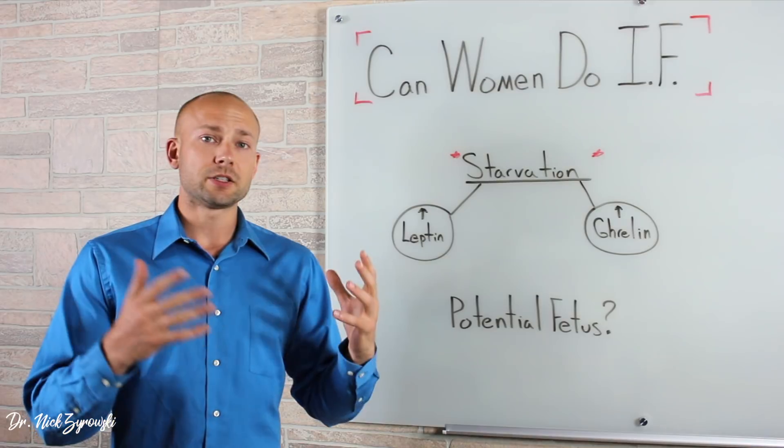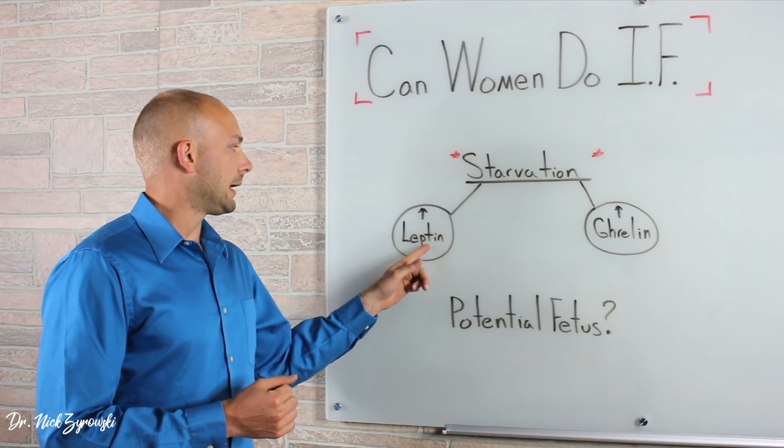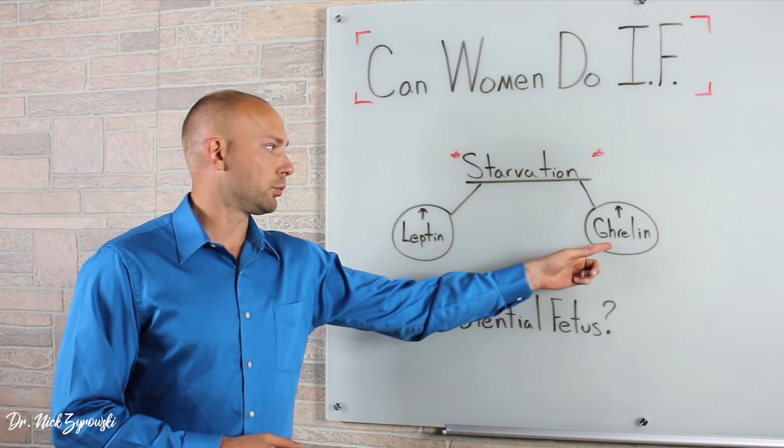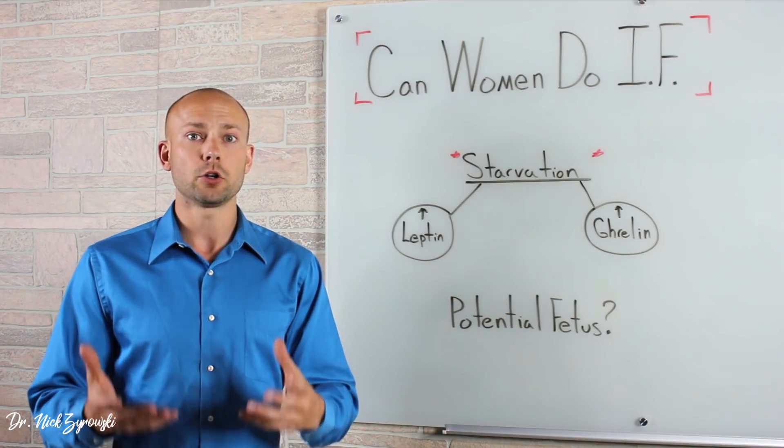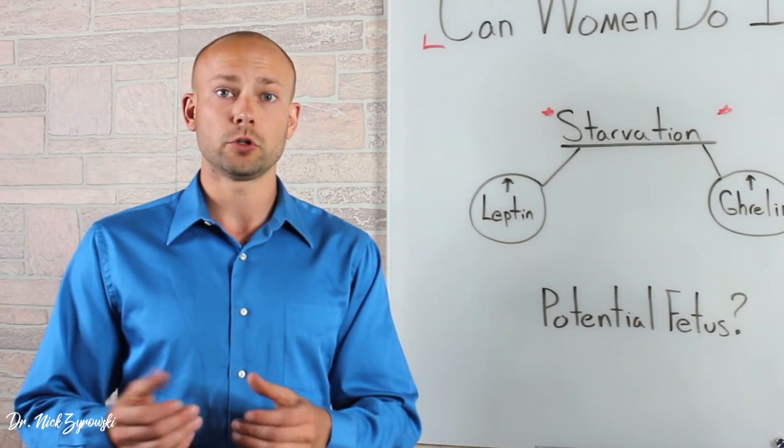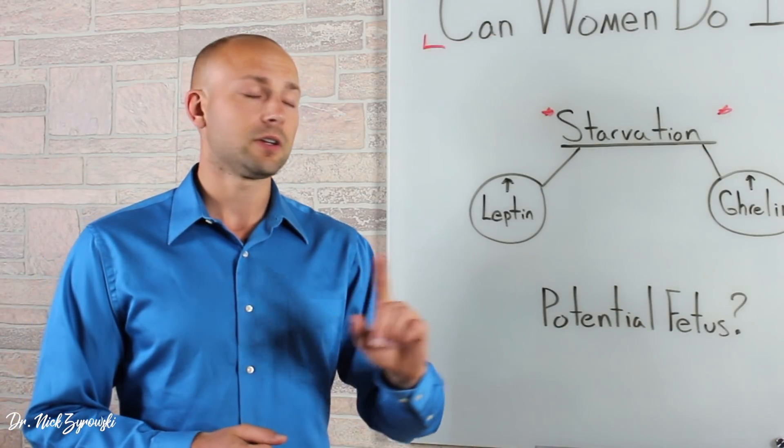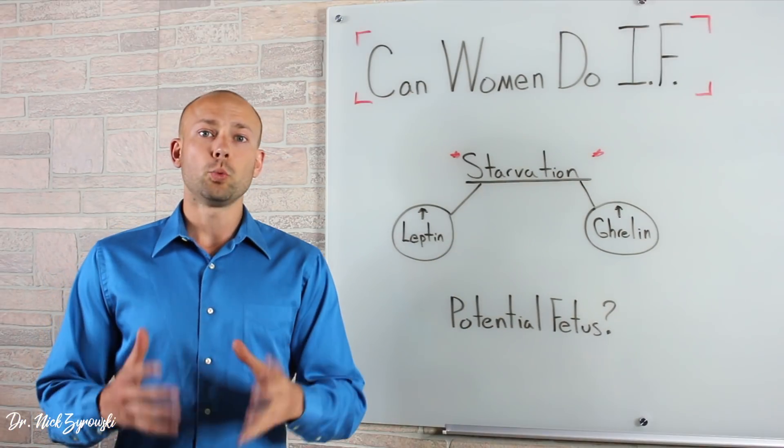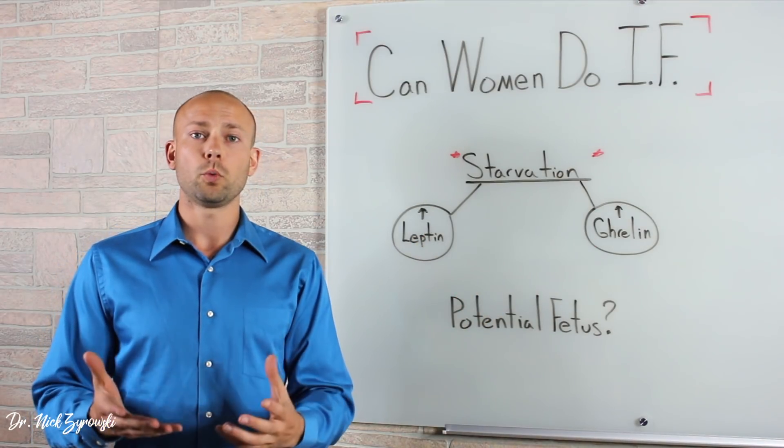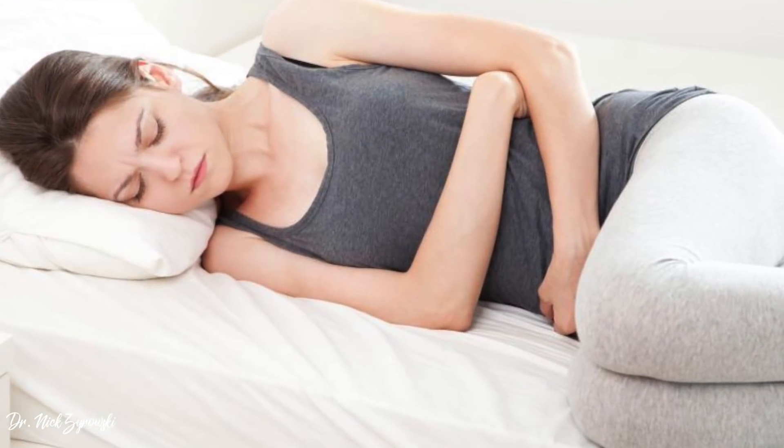Now when we look at intermittent fasting, essentially what happens is there's two hormones. One is leptin that's going to be increased and this tells your body to burn fat. And then there's ghrelin, which will be increased and that's going to tell your body you're hungry. Now because a woman's body is designed to bear children and also always be prepared for a potential fetus, it is very sensitive to starvation. So when intermittent fasting with these hormones risen for a long time, essentially what can happen is your body will throw up a red flag and say, we need to protect ourselves because we're starving.